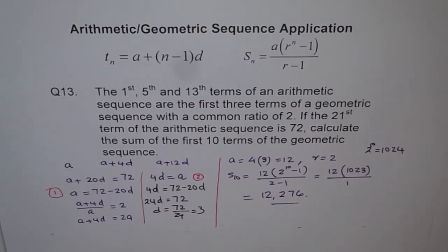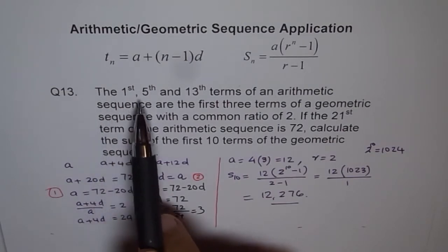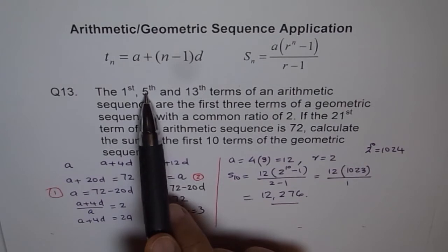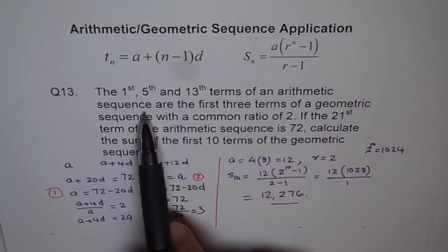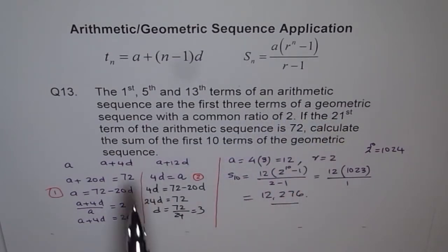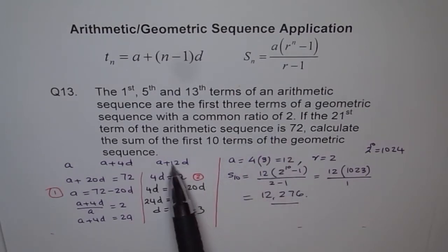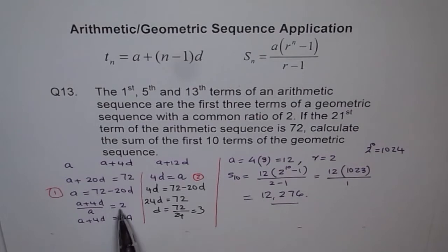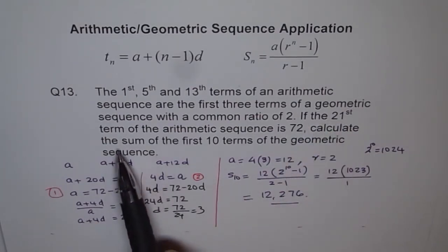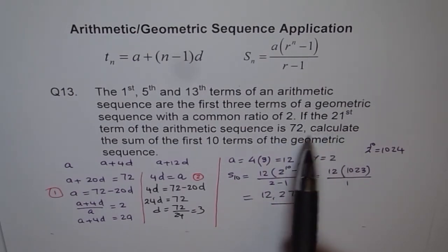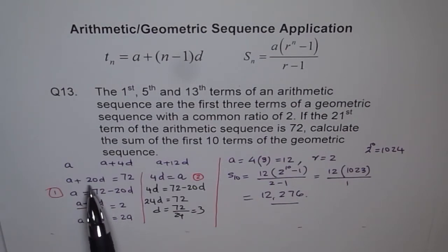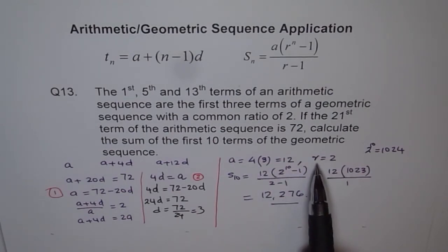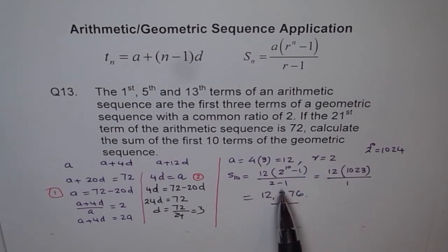I hope you appreciate how we did it. To summarize: the first, fifth, and thirteenth terms of the arithmetic sequence give us A, A plus 4D, and A plus 12D. Since these are the first three terms of the geometric sequence with ratio 2, we set up A plus 4D divided by A equals 2 as Equation 2, and A plus 20D equals 72 as Equation 1. Combining them, we found both A and D, then used the geometric series sum formula to get 12,276. I hope you enjoyed the process. Thank you.